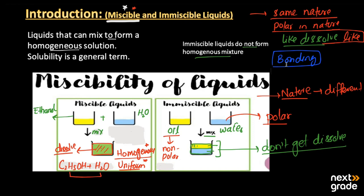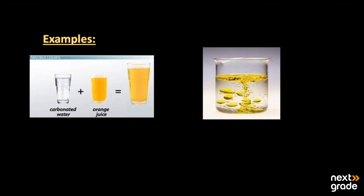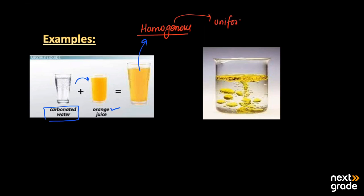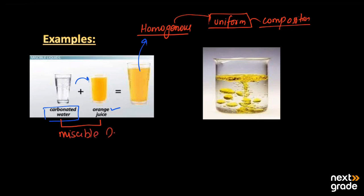We have many examples in daily life related to miscibility and immiscibility. The first example is carbonated water or any carbonated drink. When we add it into orange juice, we see that it forms a homogeneous mixture — meaning a composition that is the same throughout and uniform. So carbonated drinks and orange juice are known as miscible liquids because they both dissolve into each other.